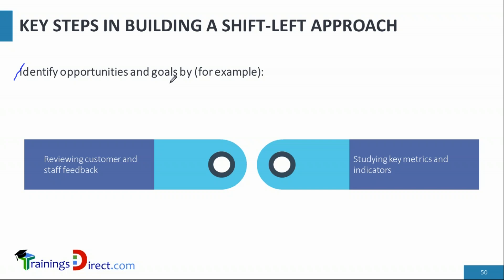ITIL recommends using continual improvement to identify opportunities. Inputs can come from customer feedback, provider staff, user feedback, and other metrics and indicators. For example, if incident resolution times have been poor and users are complaining that incidents aren't being handled on time, that could point to an opportunity to apply shift left to incident management — that's how opportunity identification works.